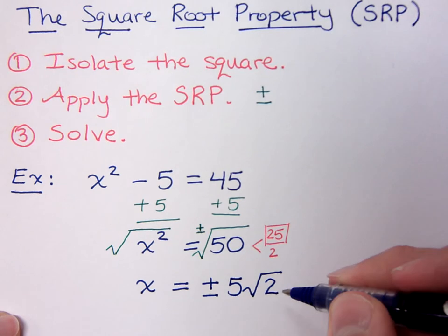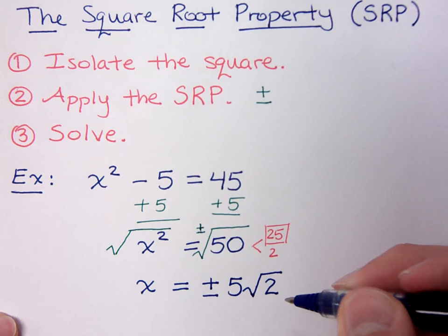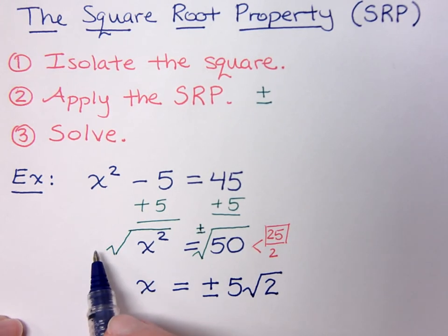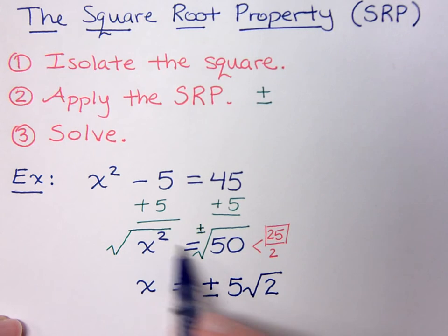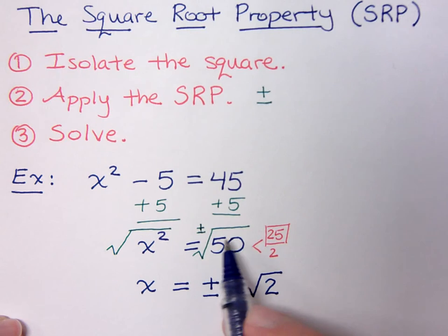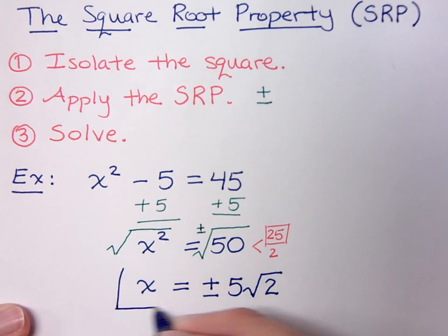So these are your two solutions, x equals plus or minus 5 square roots of 2. We isolated the radical in the first step. We applied the square root property, don't forget your plus or minus, and then we just simplify the radical. So here are our two answers.